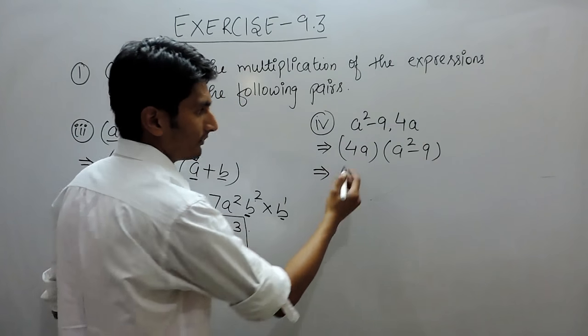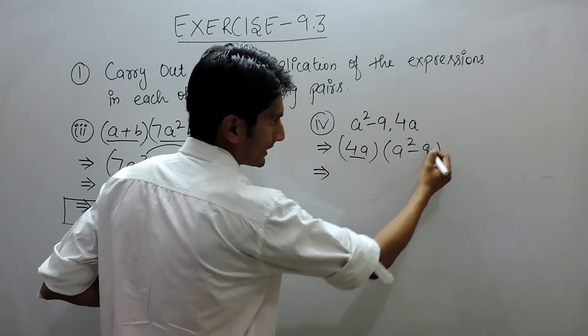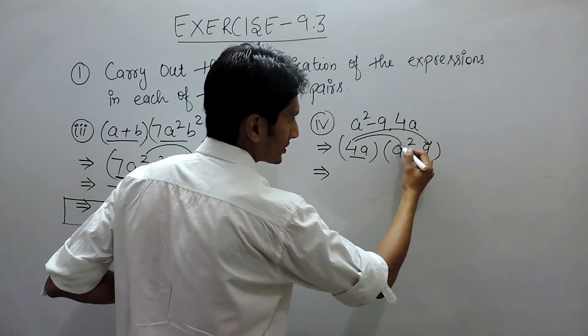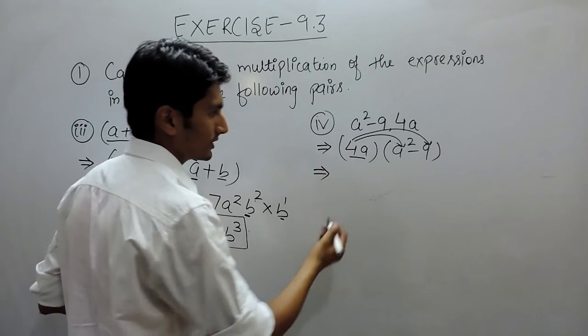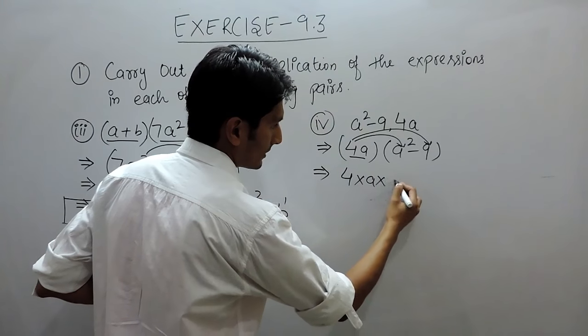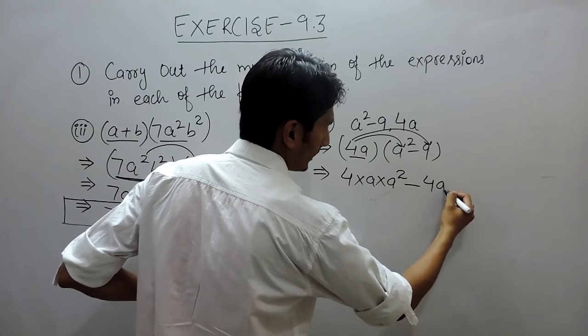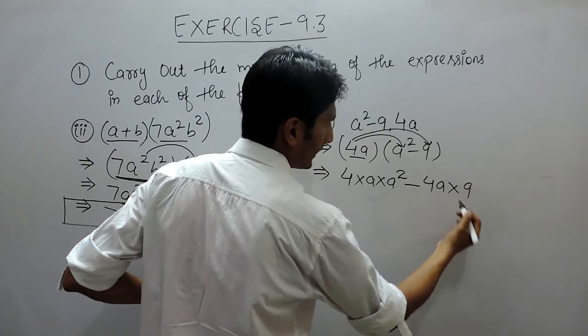And we know that when this term is multiplied by this expression, you have to multiply it with both the expressions, or you can say with both the terms. So 4a is multiplied by a², and 4a should again be multiplied by 9.